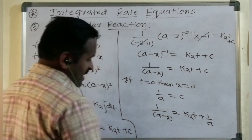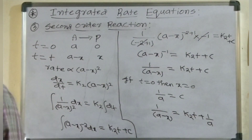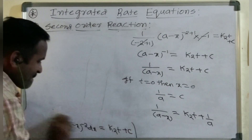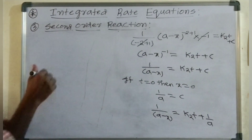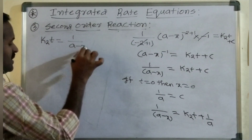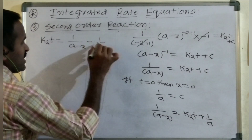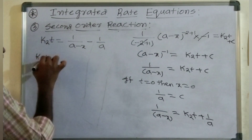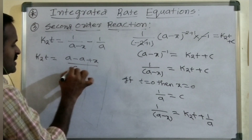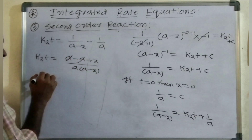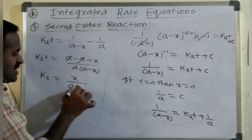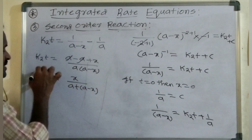On simplification, taking 1/A to this side, we get K2·T equals 1/(A minus X) minus 1/A. Simplifying further: K2·T equals (A minus (A minus X)) divided by A·(A minus X), which gives K2·T equals X divided by A·(A minus X). Therefore, K2 equals X divided by A·T·(A minus X). This is the second order rate constant when a single reactant is involved.